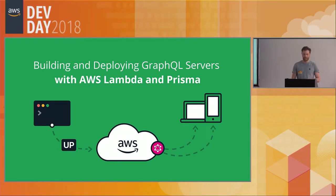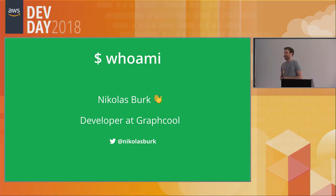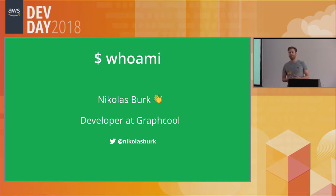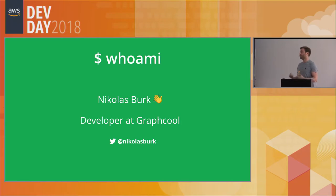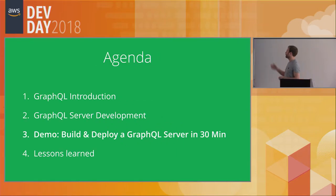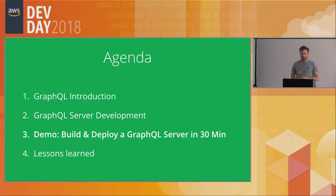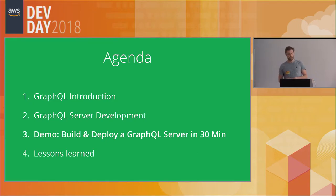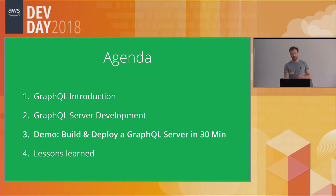My name is Nicholas Burke and I work as a developer at a company called Graphcool. We're a startup based in Berlin building tooling around GraphQL. Our latest product is called Prisma, which is the glue between a database and your GraphQL server. The agenda: first a brief introduction to GraphQL, then GraphQL server development mechanics, then a large practical part building a GraphQL server from scratch and deploying it with AWS Lambda, and finally some lessons learned for using Lambda with GraphQL.